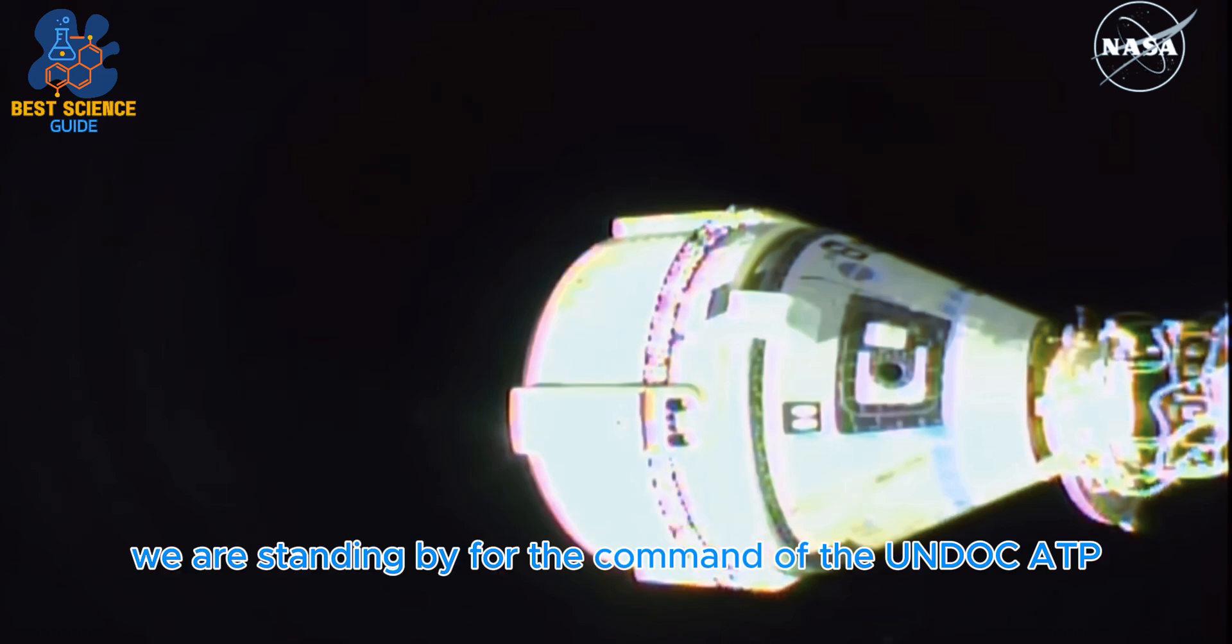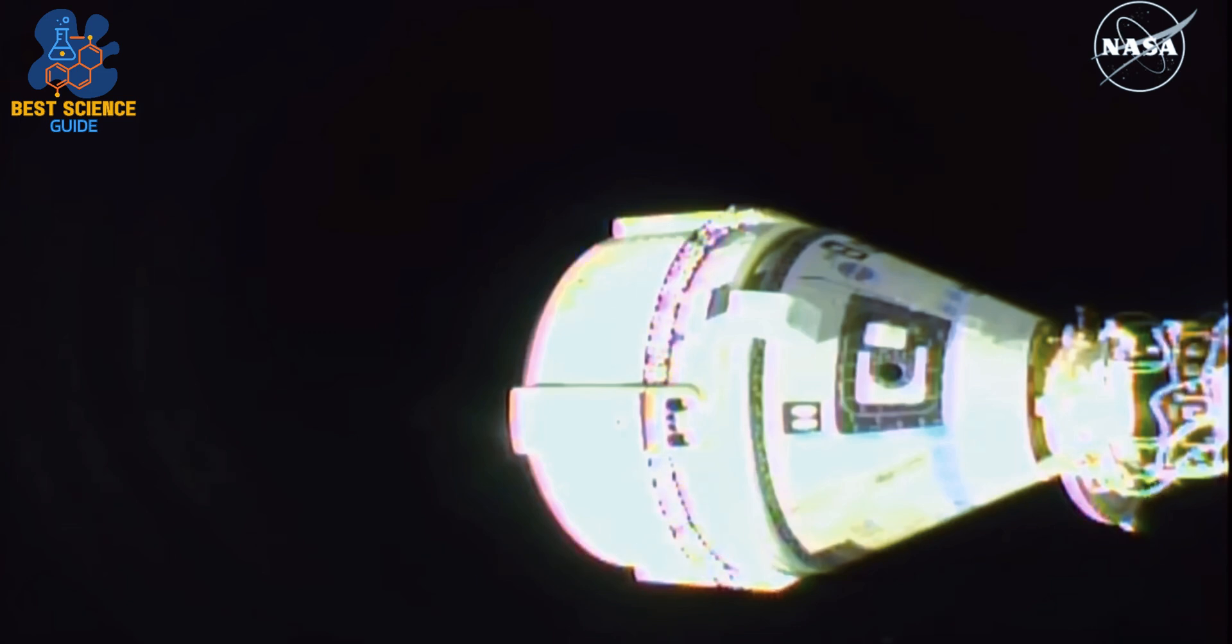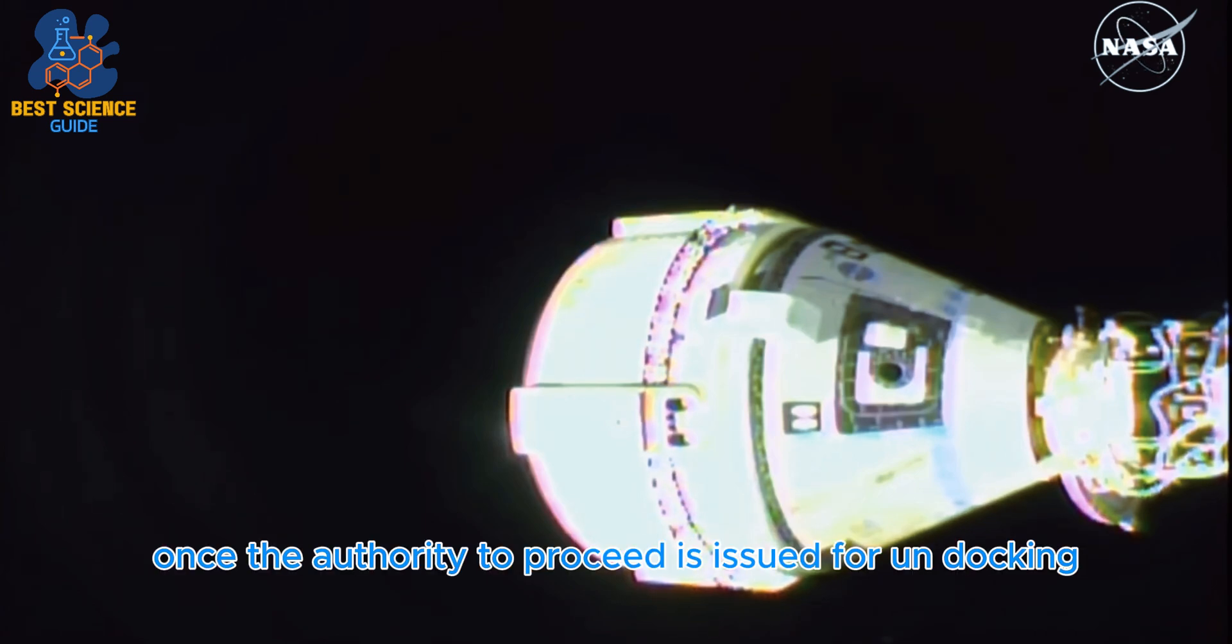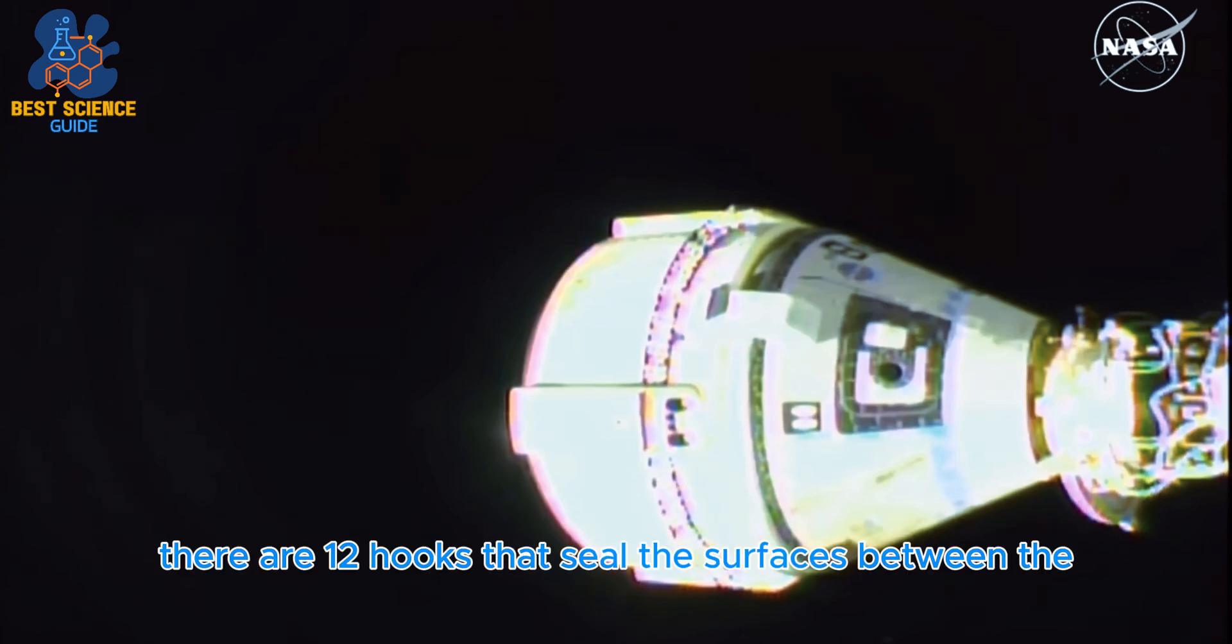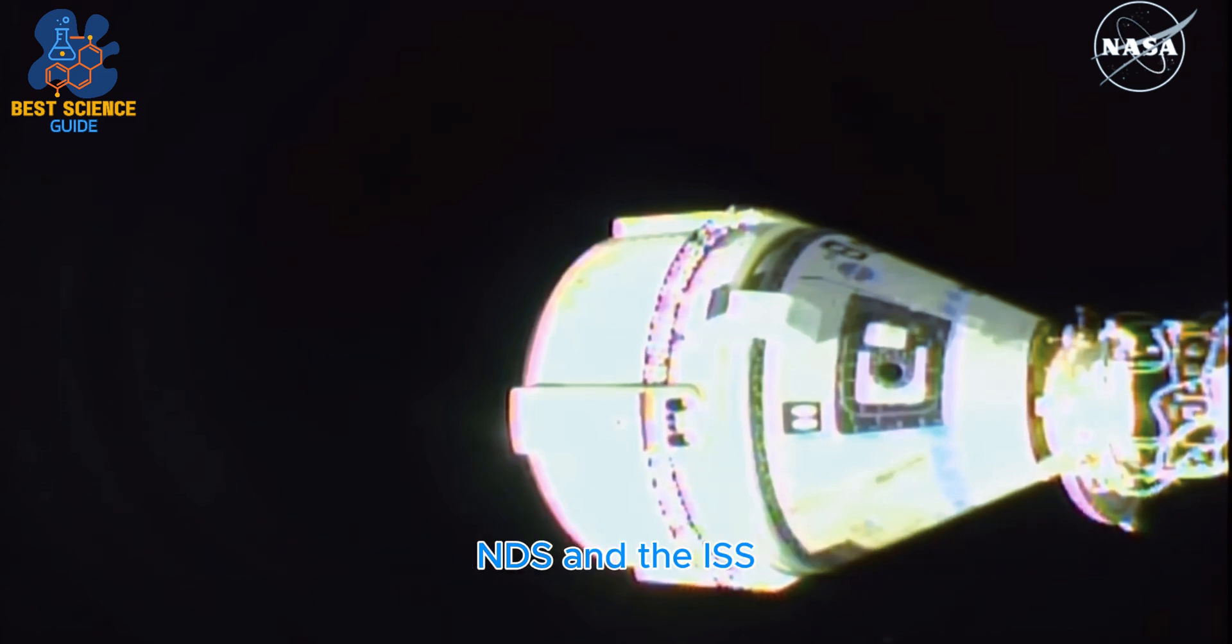We are standing by for the command of the undock ATP or authority to proceed. Once the authority to proceed is issued for undocking, the NDS or NASA docking system hooks will begin to open, and there are 12 hooks that seal the surfaces between the NDS and ISS International Docking Adapter or IDA.